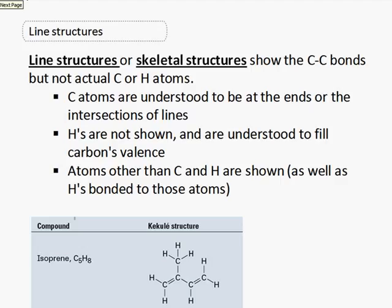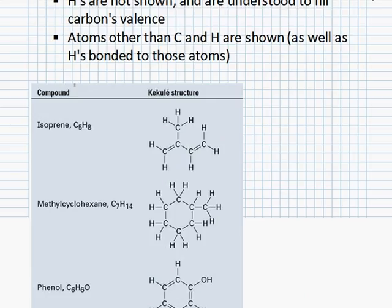To save even more time than drawing those condensed structures, we'll be drawing line structures. The book calls them skeletal structures sometimes. I like saying line structures. They actually show all the CC bonds, but don't show any Cs. And they don't show any Hs. In order for that to work, we have to understand that carbon atoms are either at the ends or the intersections of lines. Hydrogens are not shown and are understood to fill carbon's valence. If we show a carbon that's only made one CC bond, we know that it has to have three Hs attached to it. It just is understood. Atoms other than C and H are shown. And if we have something like an oxygen or a nitrogen, and if it has hydrogens, we'll show those hydrogens. Hs bonded to other atoms are shown.